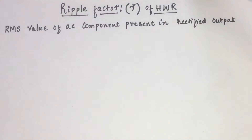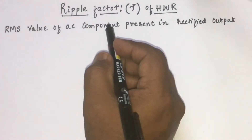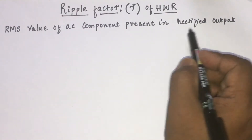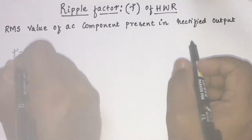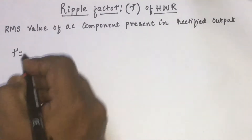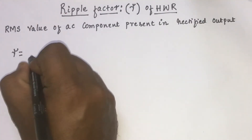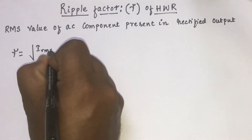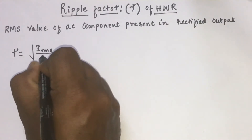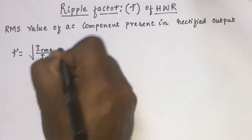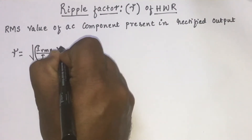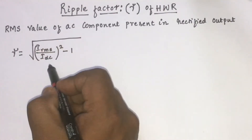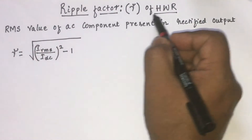So we need to find what is the amount of ripple factor, or what is the amount of AC component that is present in the already rectified output. We will find the ripple factor using the equation: square root of (I_rms divided by I_dc) whole squared minus 1. Using this equation we will find the ripple factor of a half wave rectifier.